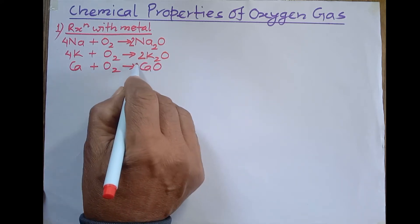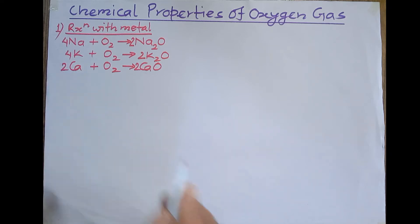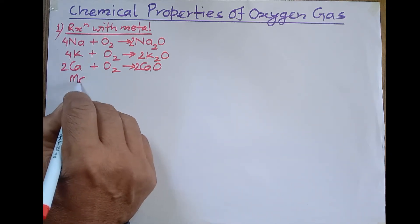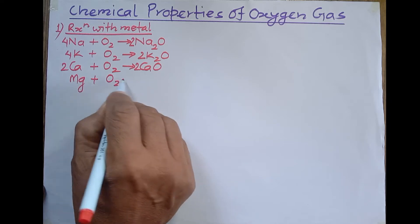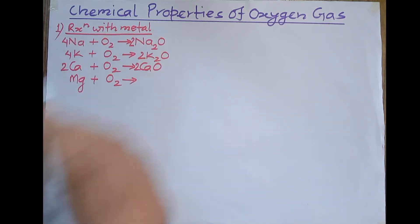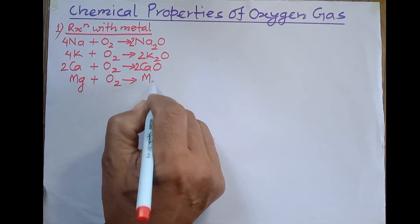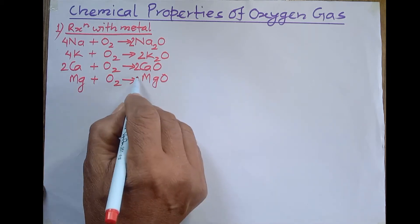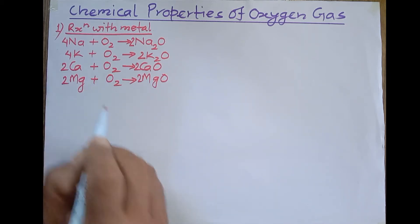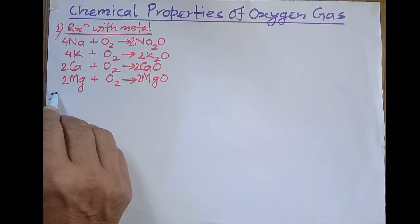Balancing the calcium oxide equation: oxygen has valency 2, so we place 2 here to balance. Magnesium also reacts with oxygen when it burns in air with a bright flame — all these metals burn in air with a bright flame — and they form magnesium oxide (MgO). This is the balanced equation. This is the reaction with metals, and we have to remember this.